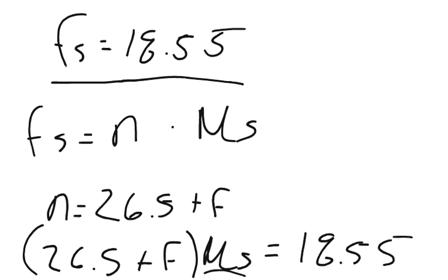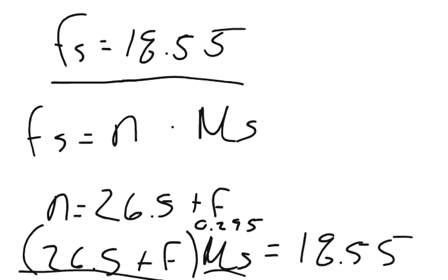Well, we know what our coefficient is. It tells us in the problem that it's 0.295. So we can just divide 18.55 by that amount. 18.55 divided by 0.295 is 62.88, and that is equal to 26.5 plus F.